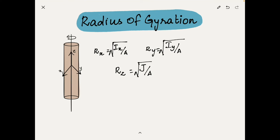The area moment of inertia along perpendicular axis is called polar moment of inertia and it is denoted by J. That is the reason for radius of gyration along z direction we have square root of J over A.